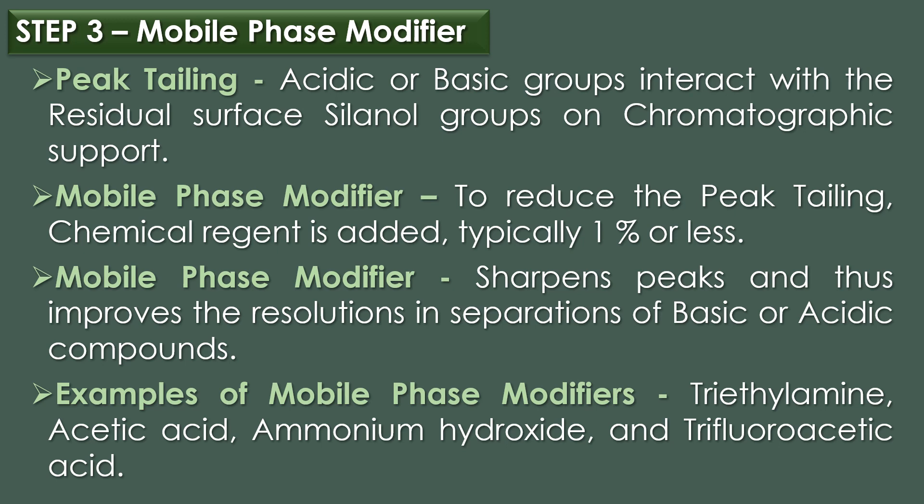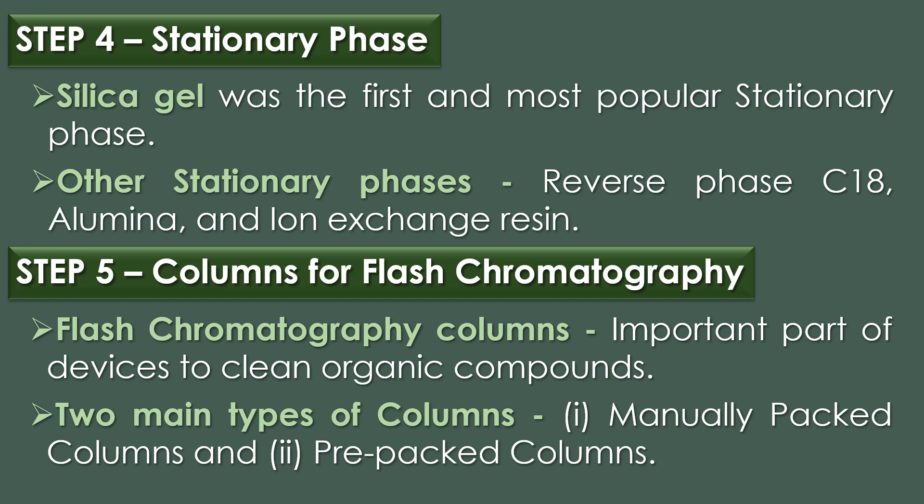Examples of common mobile phase modifiers include triethylamine, acetic acid, ammonium hydroxide, and trifluoroacetic acid. The fourth step is the stationary phase. Silica gel was the first and most popular stationary phase used in flash column chromatography. Other stationary phases such as reverse phase C18, alumina, and ion exchange resin have also been used.